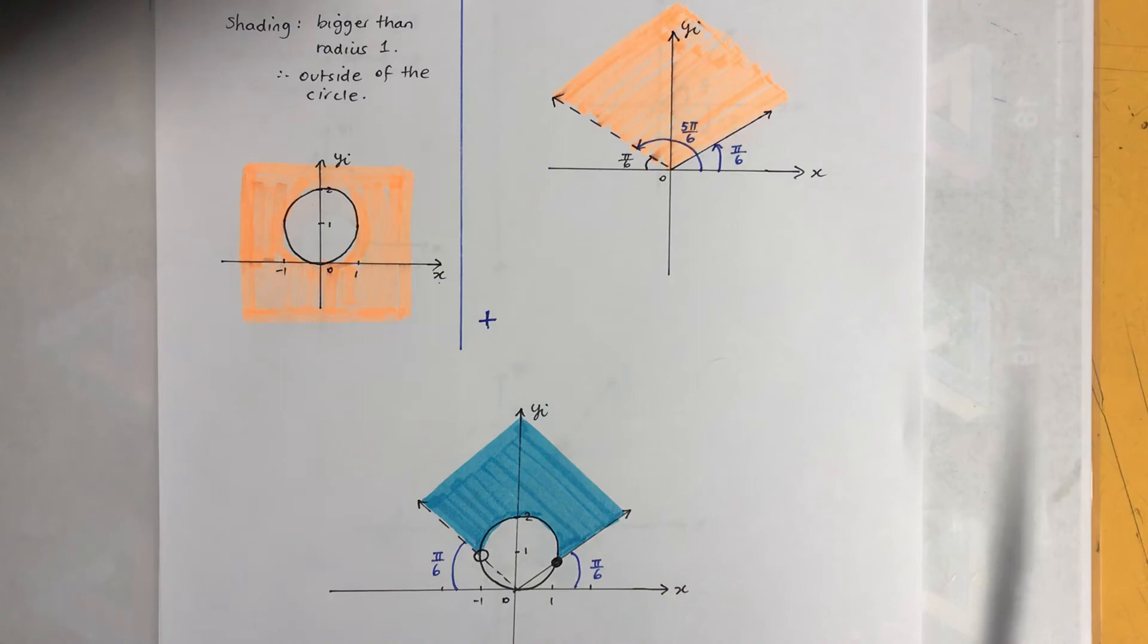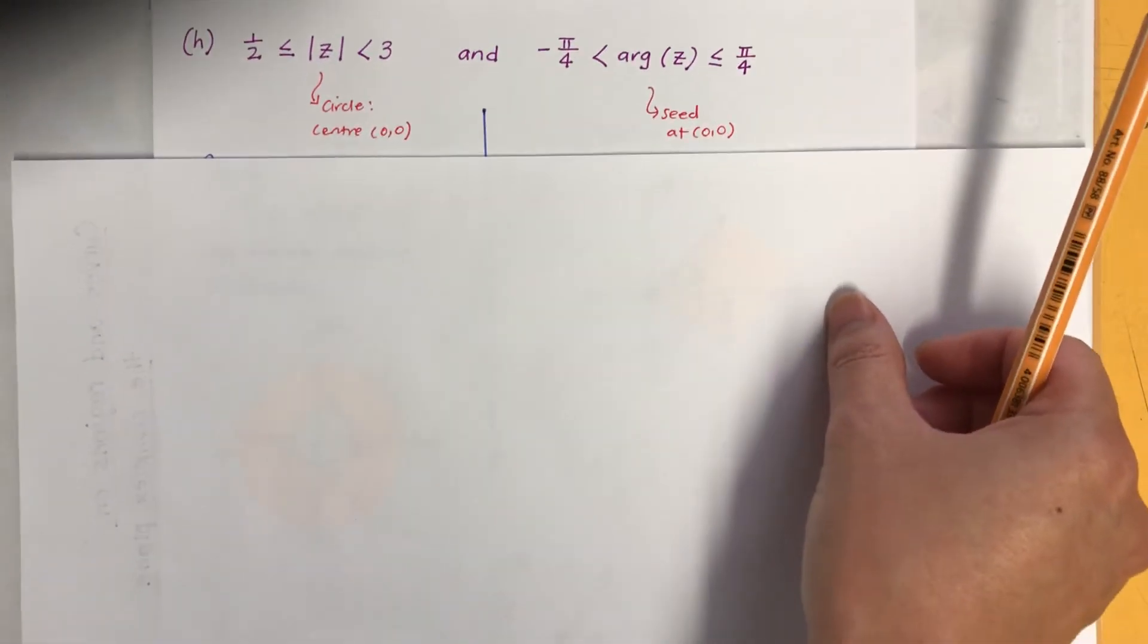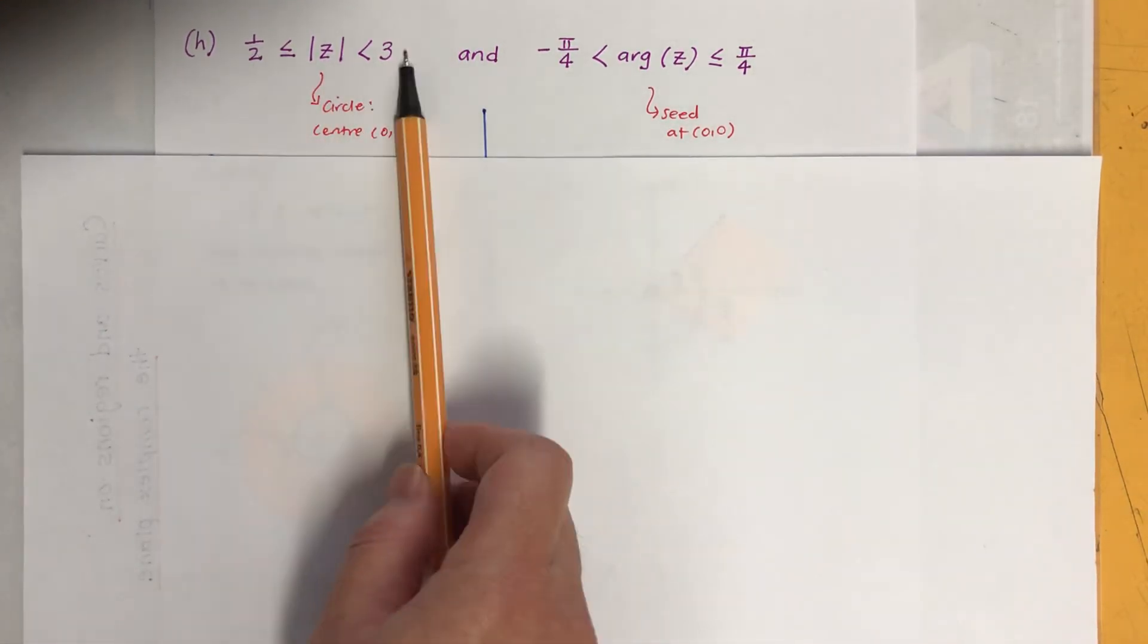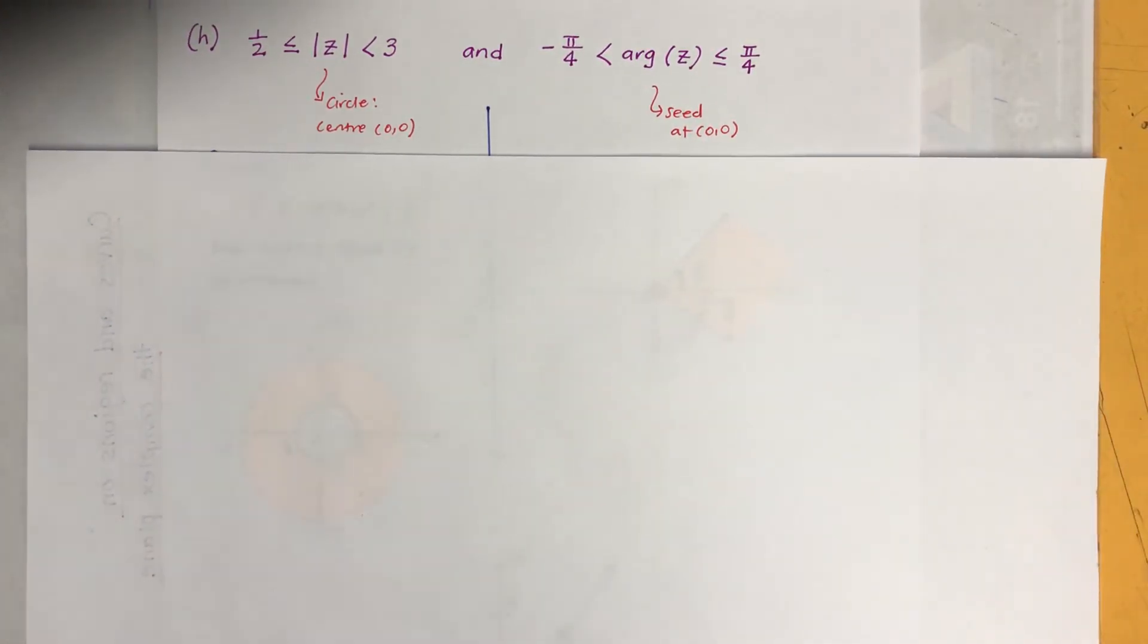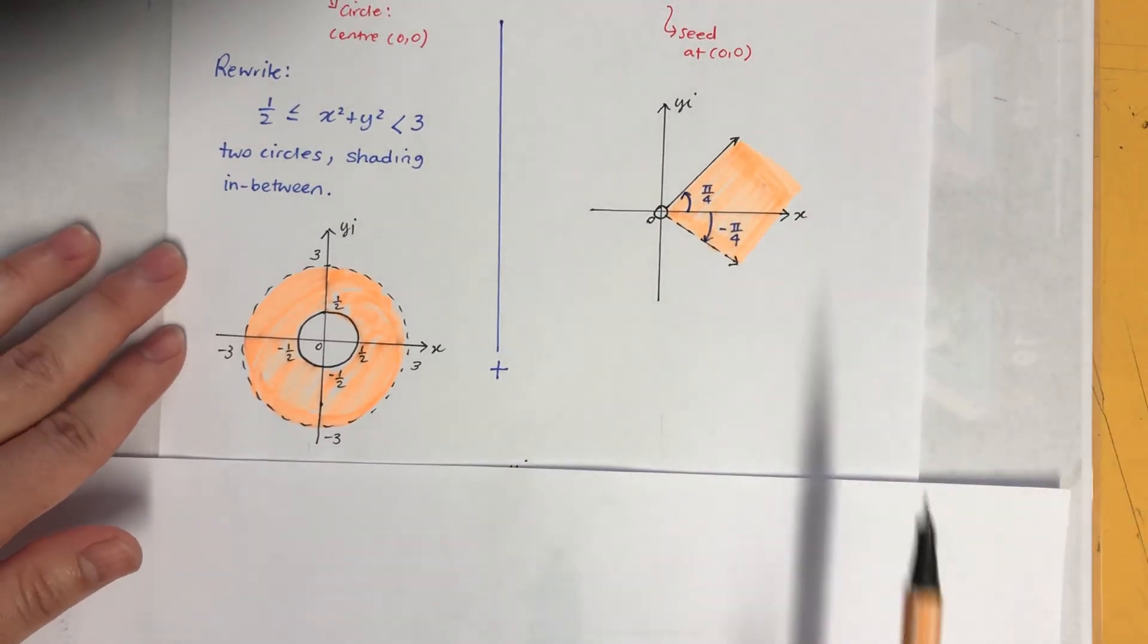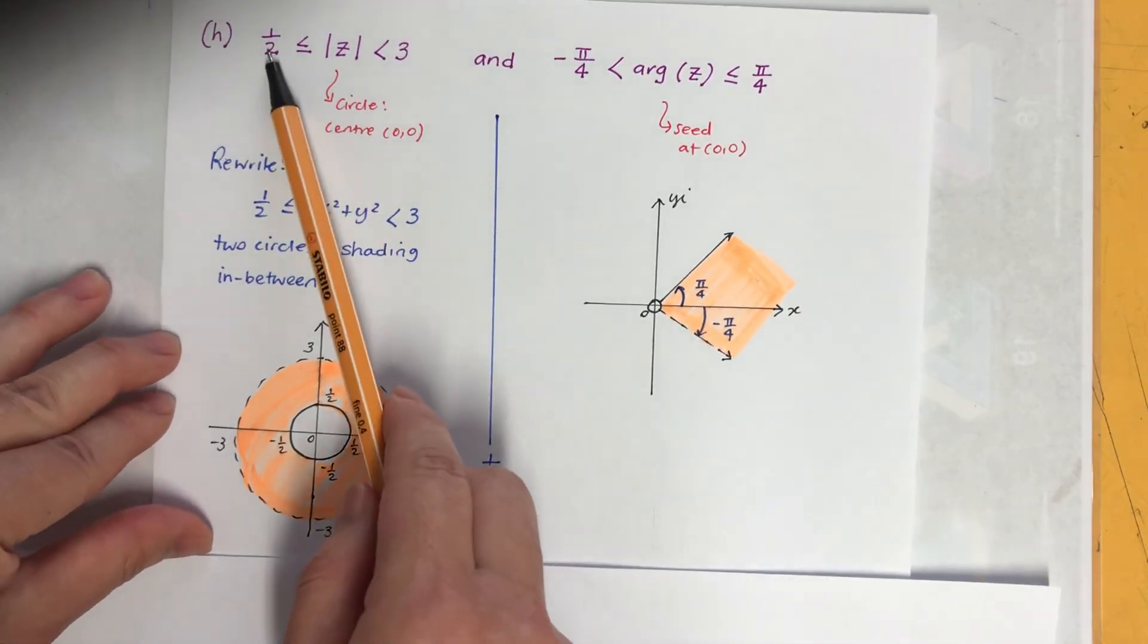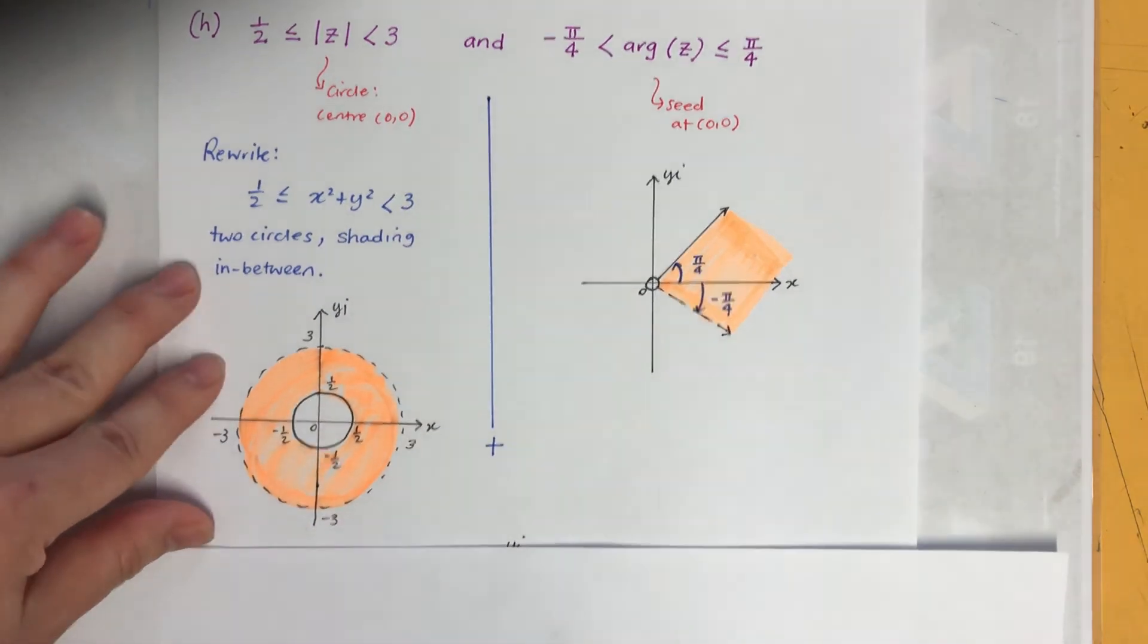Okay, the last one. So again, it's not too bad. It's a circle, two circles, isn't it, because you've got two radius there. And then that's the arguments there. And seed at zero zero. And I sketch this separately, it'll look like this. Okay, so remember it's not equal to, and the half radius, half is equal to. The radius three is not, so it's a broken line, and it's in between shaded.